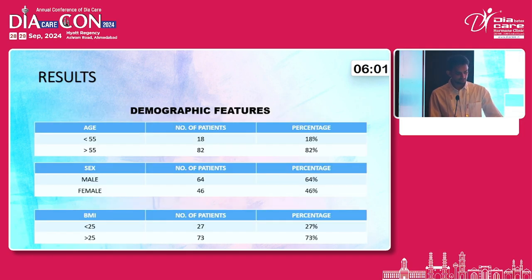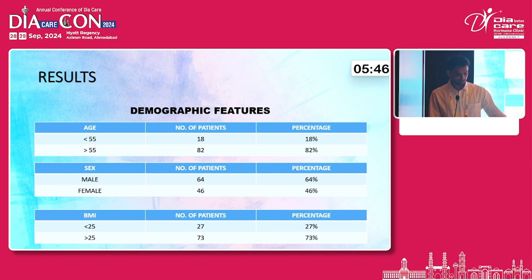The results showed that patients above 55 years of age had an 82% probability of developing a lacunar stroke. Among the sexes, female sex had 46% and male sex had 64% probability of developing lacunar stroke. Regarding BMI, patients with a BMI greater than 25 accounted for 73 of those who developed lacunar stroke.